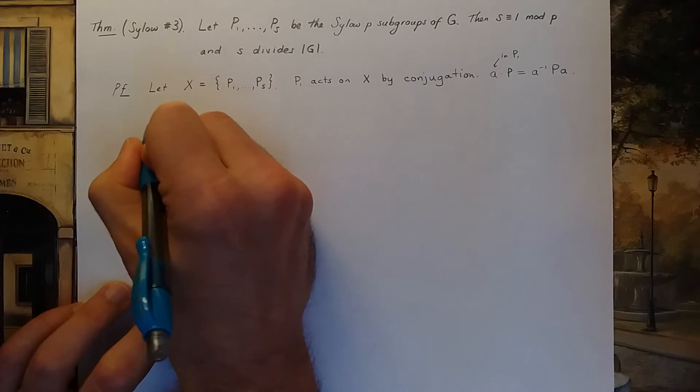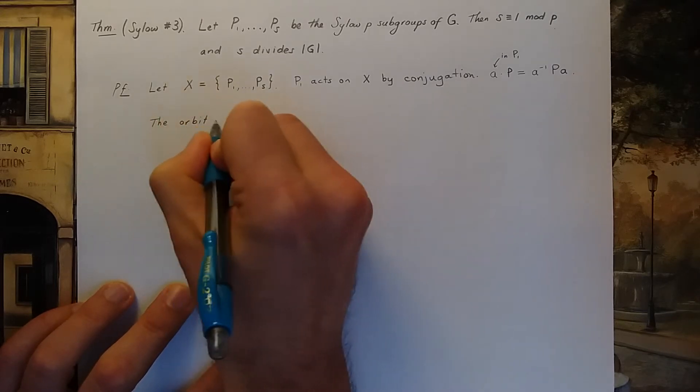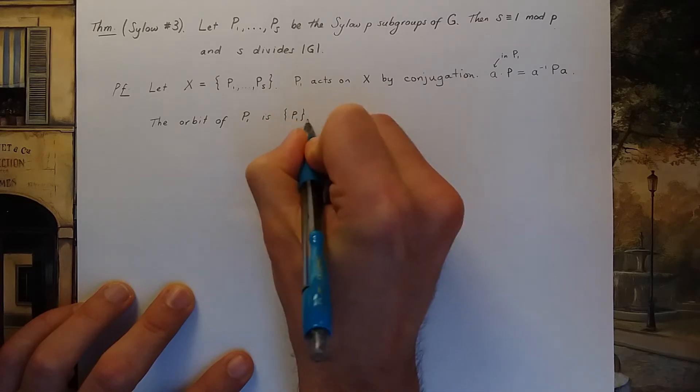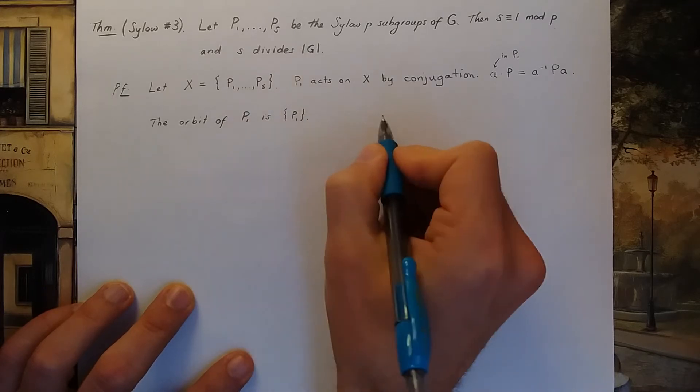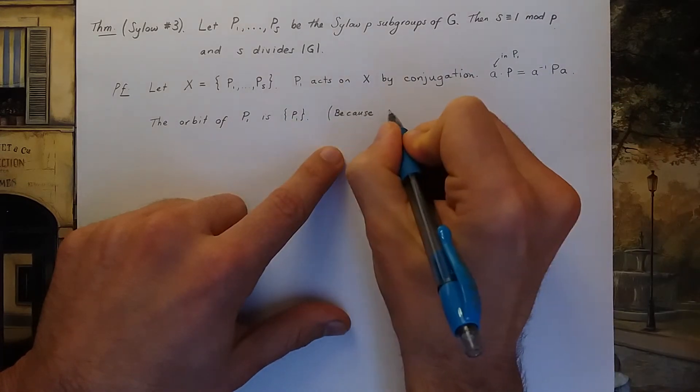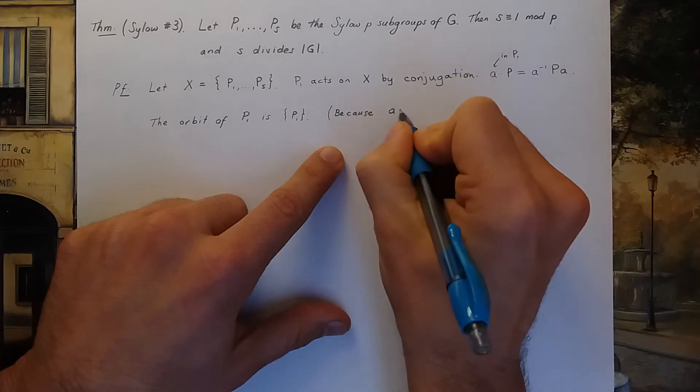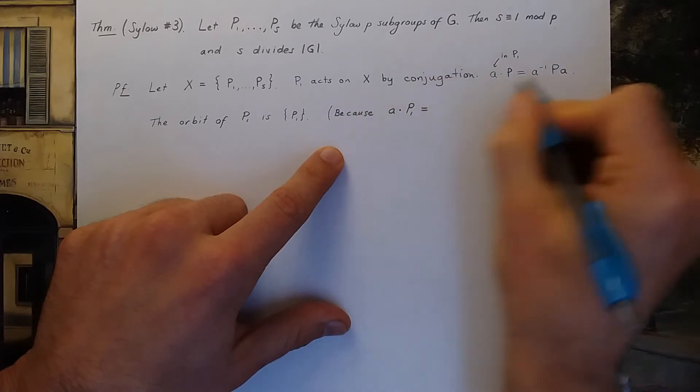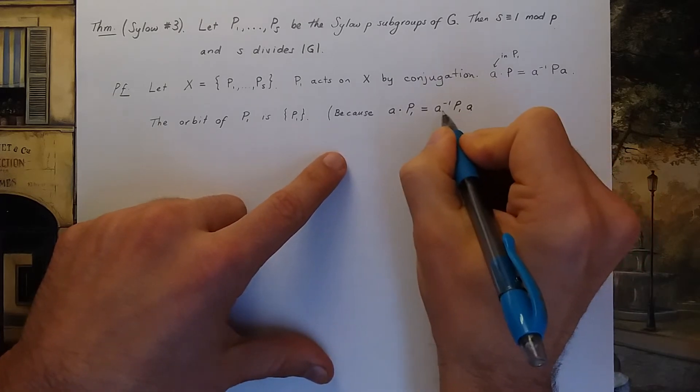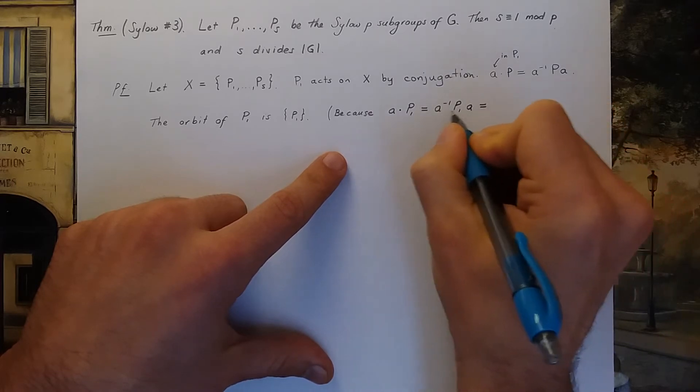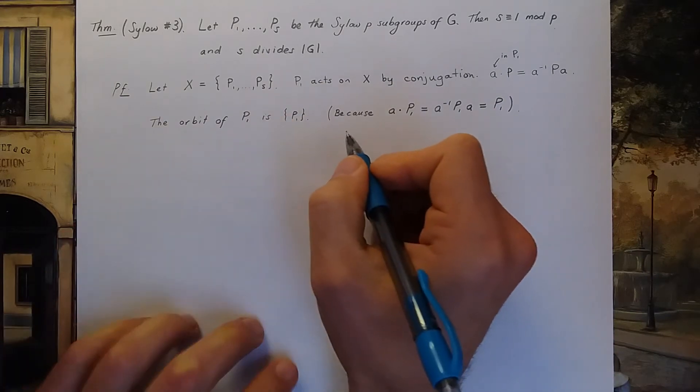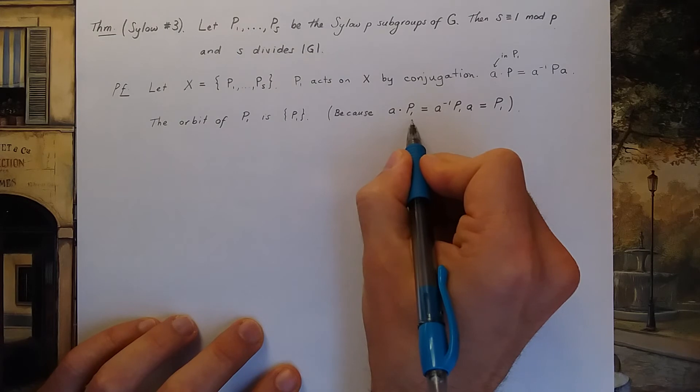Now, a key observation is that the orbit of P₁ under this group action is just the set {P₁}. P₁ is the only element in its orbit. What does that mean? Well, this is because if I take any element a in P₁ and I operate on the set P₁, this, by definition of the group action, is a⁻¹P₁a. But P₁ is a subgroup, so it's closed under multiplication. This is just P₁ again. That's true for all a in P₁, so that's the same equivalent statement as saying P₁ is in its own orbit.